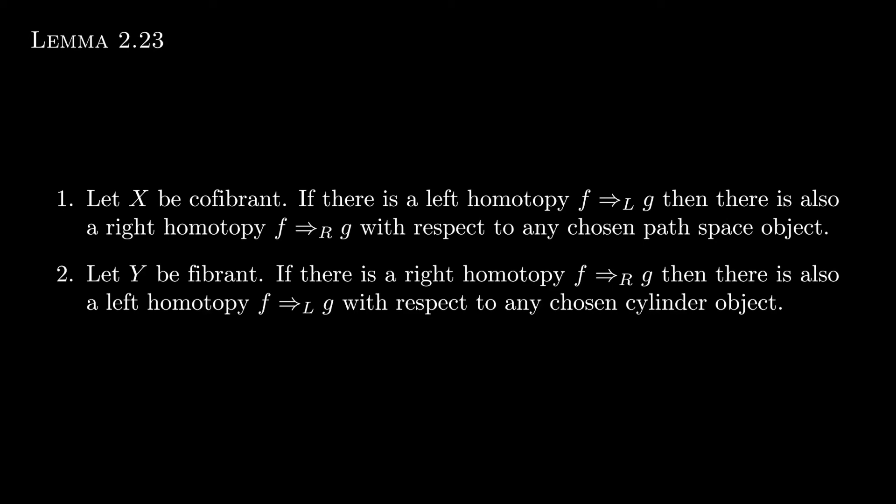So if x is cofibrant, then each left homotopy corresponds to a right homotopy with respect to any chosen path space object. And if y is fibrant, then dually for each right homotopy, there's a left homotopy with respect to any chosen cylinder object.